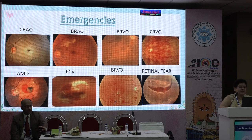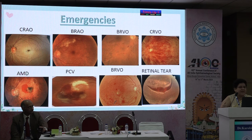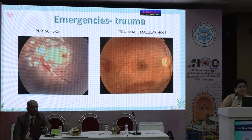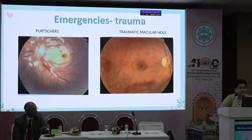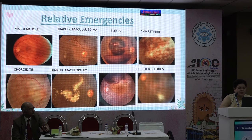These are emergencies: CRAO, BRAO, BRVO, CRVO, AMD, PCV, retinal tear. When I say emergencies, it is from the point of view of the patient who has suddenly lost vision — it may be a relative emergency for the physician but a true emergency for the patient. Other emergencies include traumatic injuries and traumatic macular holes. In a macular hole the patient will complain of a black scotoma in the center of their vision.